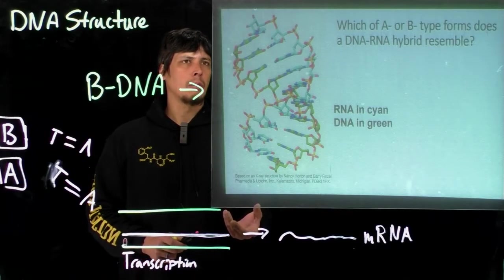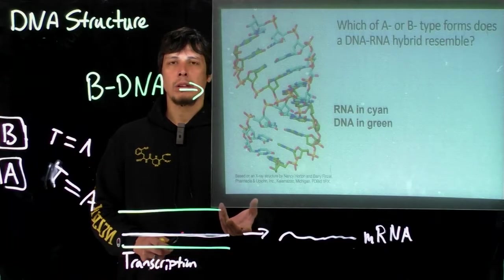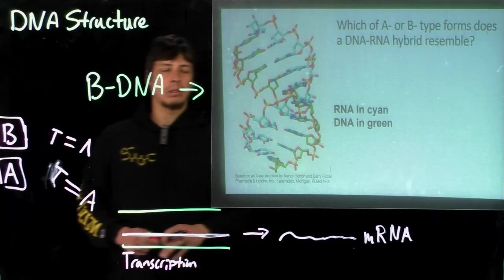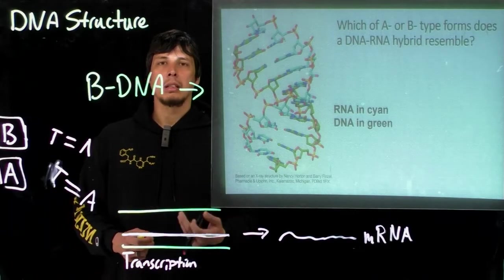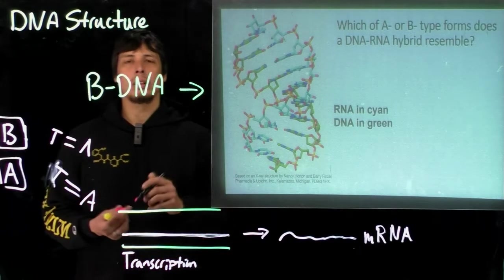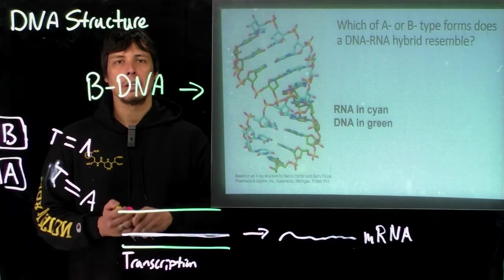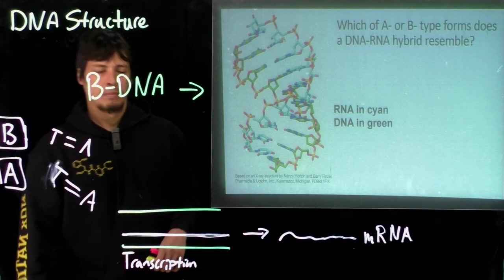So what does this look like to you? If you look at just this small section of it, does this look more like A-type or B-type DNA, based on the structures from the last couple of slides? What does this look like to you?